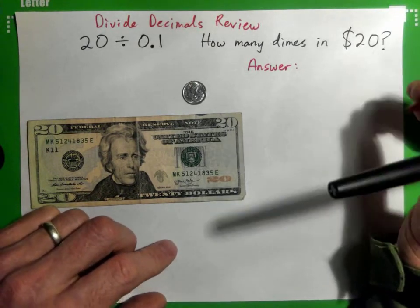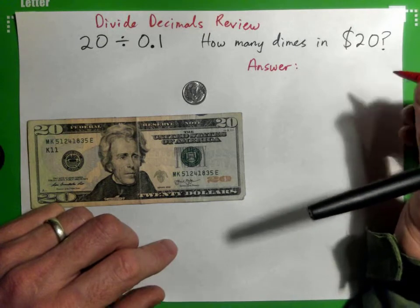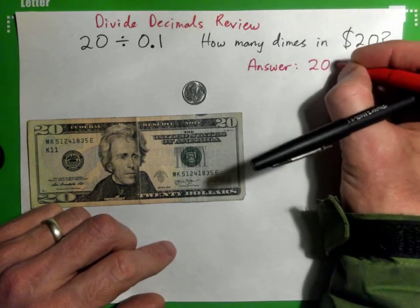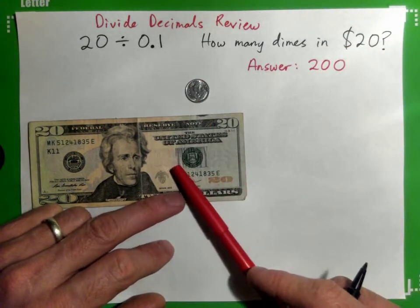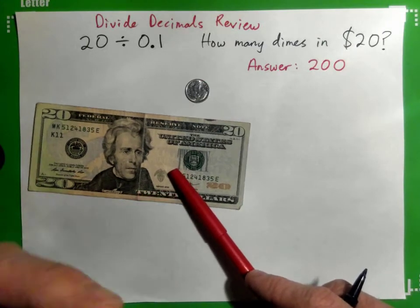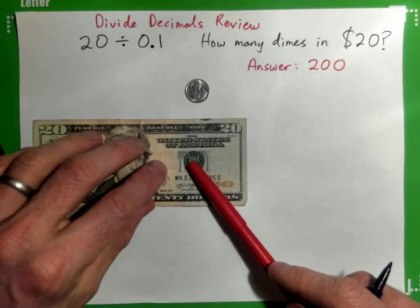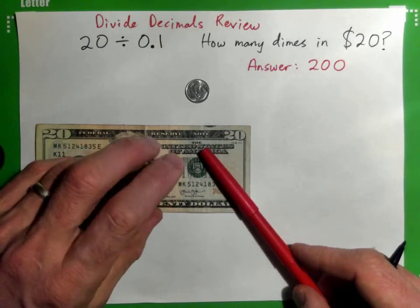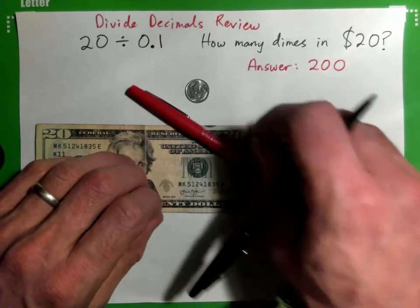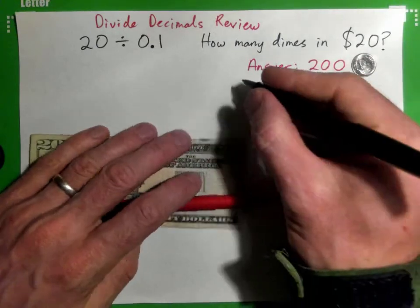Not 10, try again. It is 200. There are 200 of these dimes in $20 because for every one dollar there's 10, but we have 20 dollars. 10 times 20 is 200. Does that make sense? 200 dimes in 20 bucks.